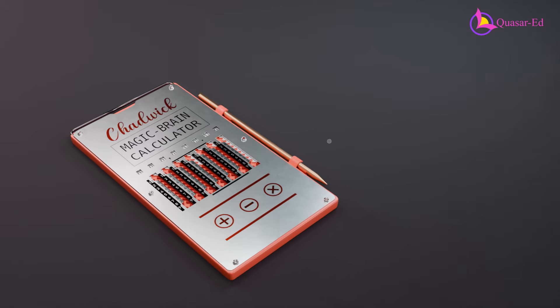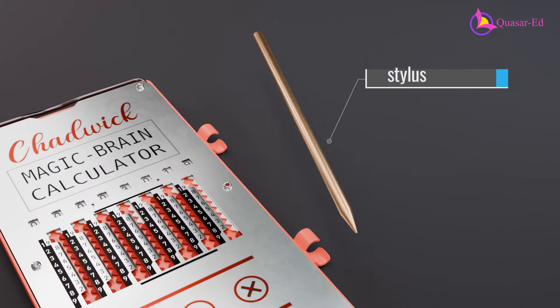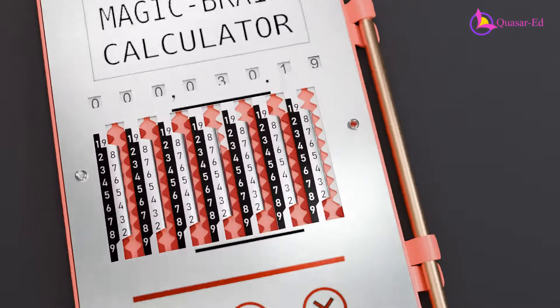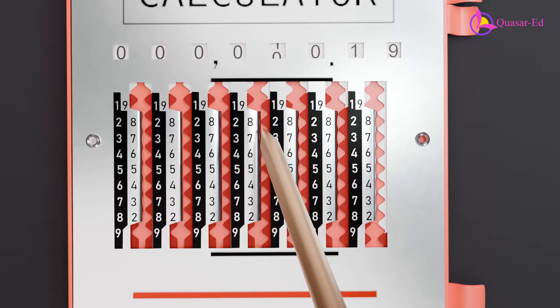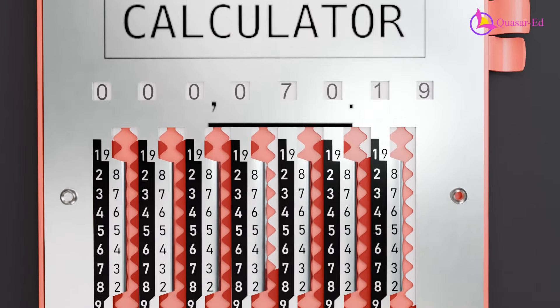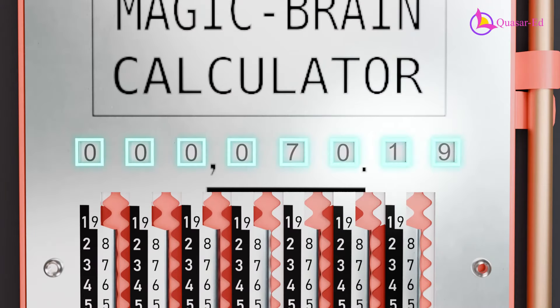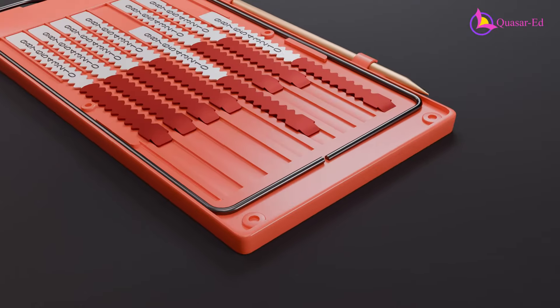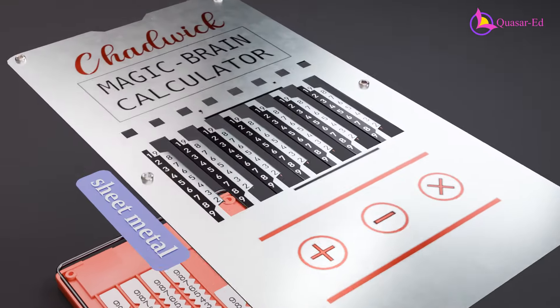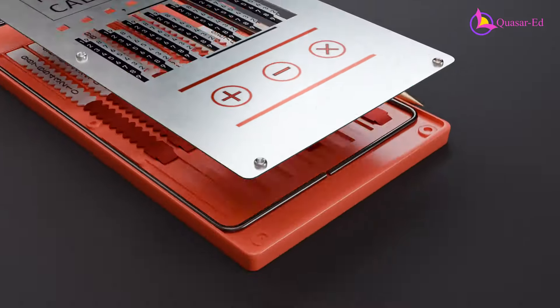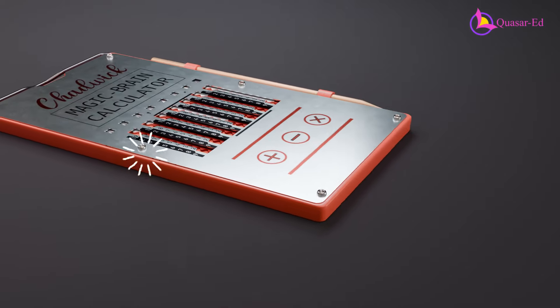On the side of the calculator there is a metal stylus. The middle section consists of seven input sliders which the stylus is used to move up or down. At the top there are eight digit windows. The base of the calculator is made of plastic while the cover is made of sheet metal with cutouts, and the two parts are joined by rivets.